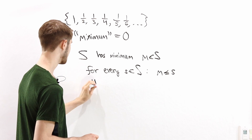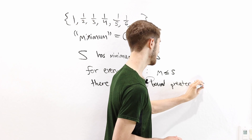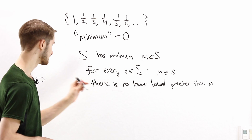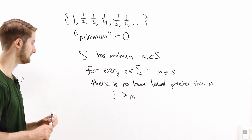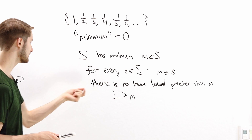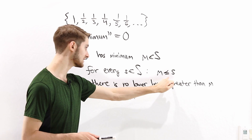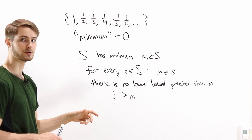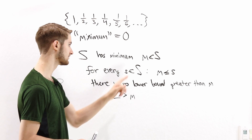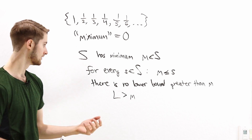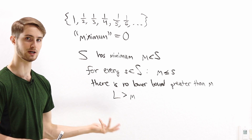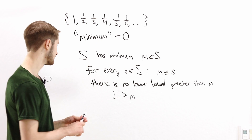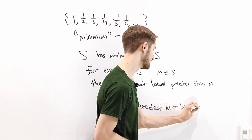One key property of the minimum is that it is a lower bound on the elements of S. Because M is the smallest element of S, for every element s in our set we have M ≤ s. Now, there is no lower bound greater than M, because M is an element of the set. So if L is greater than M, then it can't be a lower bound on S, which means there is no lower bound that's greater than M.